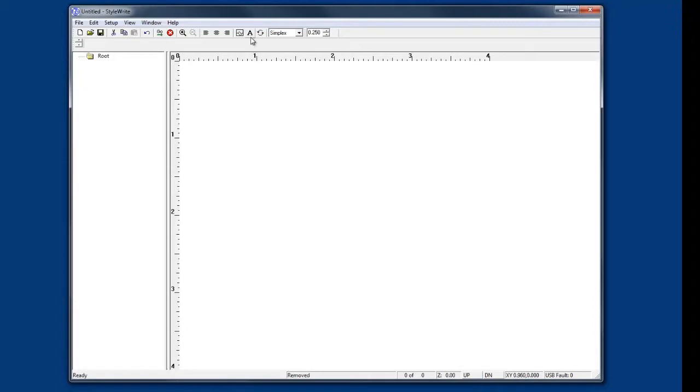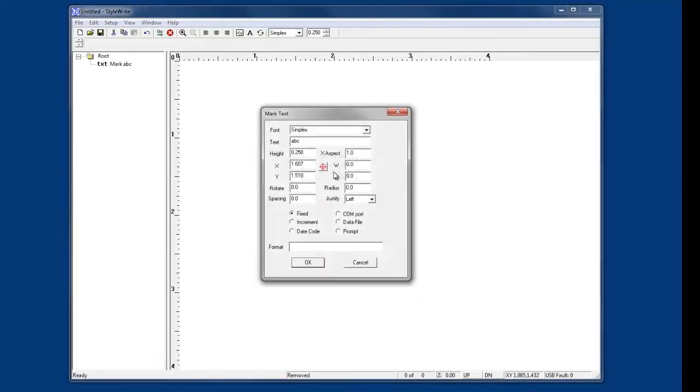Click the A icon in the menu bar to bring up the mark text dialog box. Drag the text box to the desired marking location and double click the text box to edit. Type in your text.